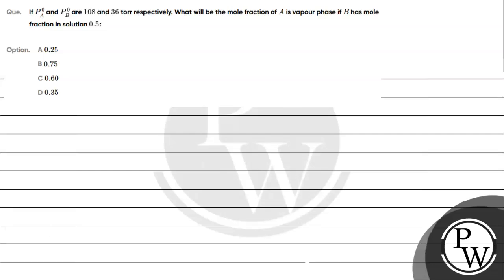Hello guys, let's read this question. The question says: if P0A and P0B are 108 and 36 Torr respectively, what will be the mole fraction of A in vapor phase if B has a mole fraction in solution of 0.5?